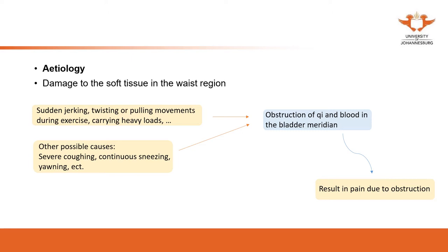The most common cause is subtle movements, especially moving something heavy, or posture changes. Some other causes include severe coughing or continuous sneezing — if the patient sneezes 10 or 20 times in a row, this can suddenly strain the lumbar soft tissue.